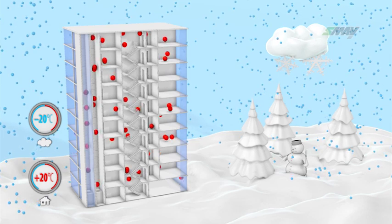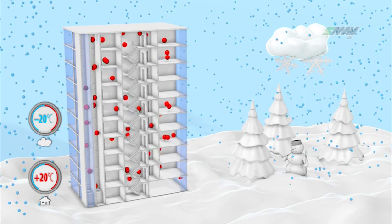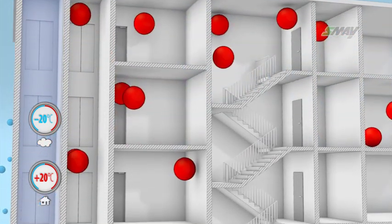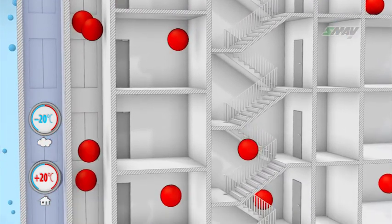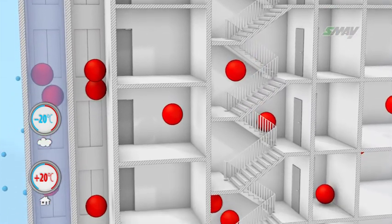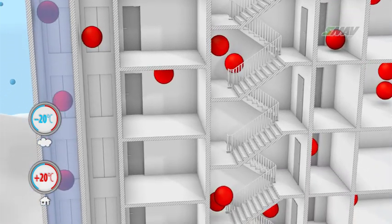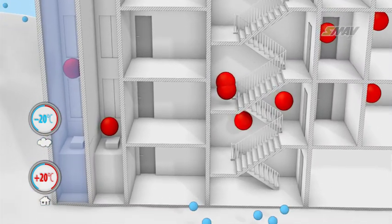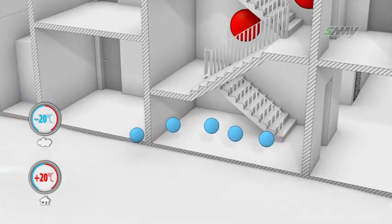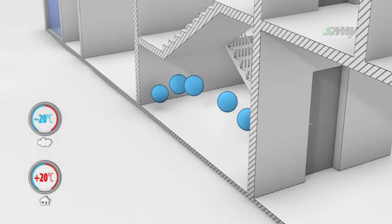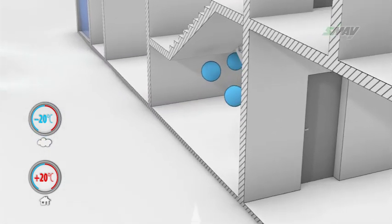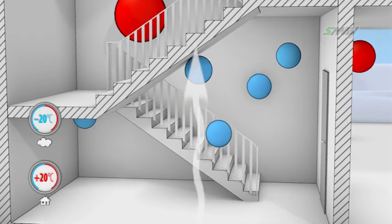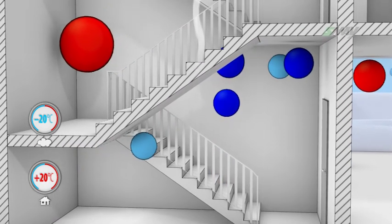Air temperature is closely related to its density: the higher the temperature, the lower the density. Differences in density significantly affect pressure distribution in buildings. In winter, ambient air gets into the stairwell and because of buoyancy it rises, causing a differentiation in pressure inside its volume.